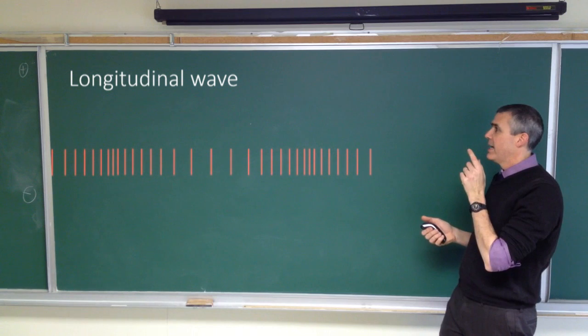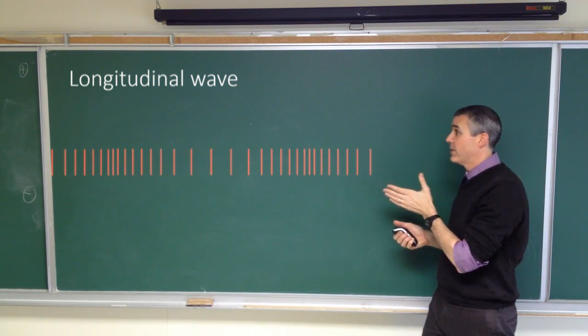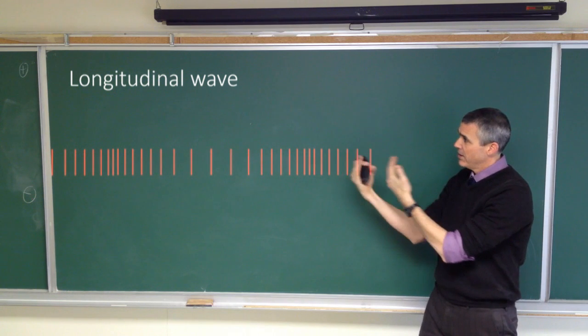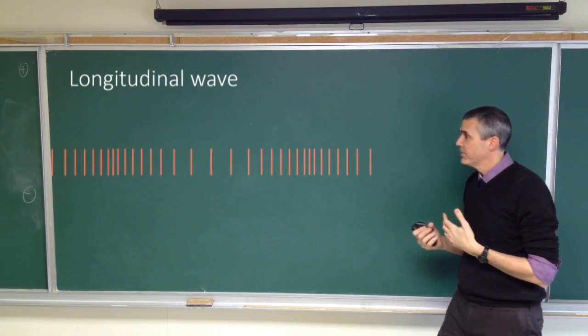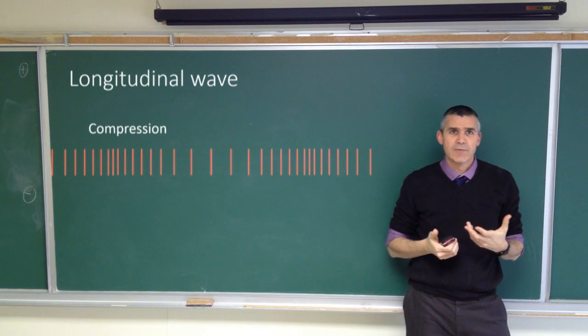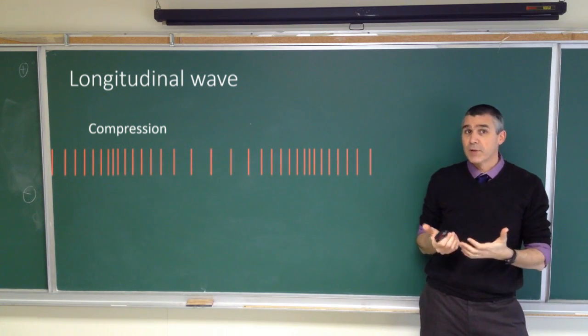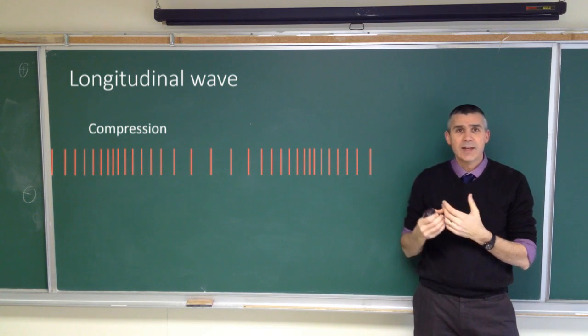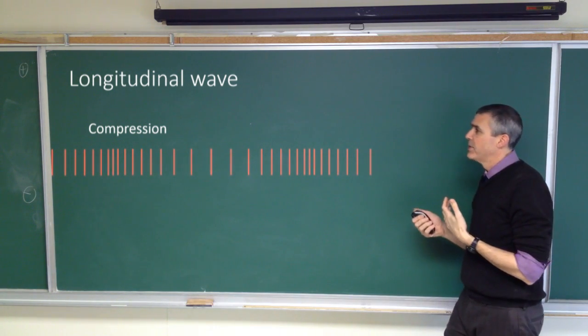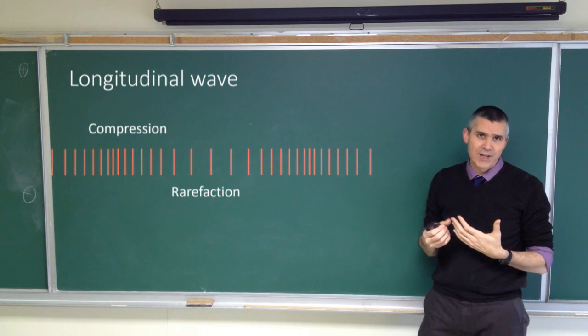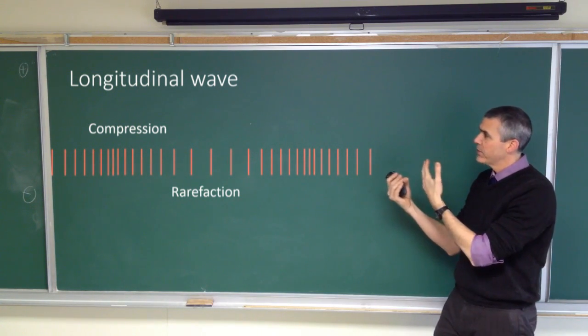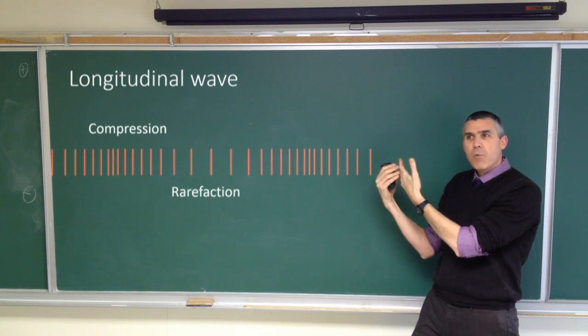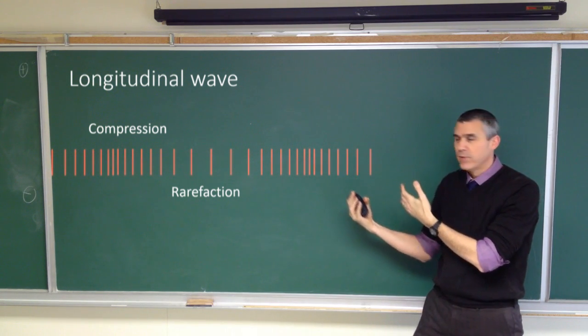If we're looking at a longitudinal wave, longitudinal waves don't have crests and troughs because the motion is in this direction, the motion of the particles. And so instead, we have compressions when those particles are compressed together. And then in between the compressions, we have regions that are called rarefactions, where the particles are becoming rarefied. They're becoming more widely spaced, or under lower pressure, if you will.